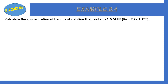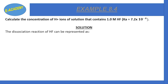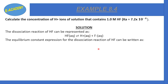Example 8.4: Calculate the concentration of H⁺ ions in a solution containing 1.0 molar of hydrogen fluoride, given Ka = 7.2 × 10⁻⁴. The dissociation reaction is: HF ⇌ H⁺ + F⁻. The equilibrium expression is Ka = [H⁺][F⁻] / [HF], where products are in the numerator and reactants in the denominator.